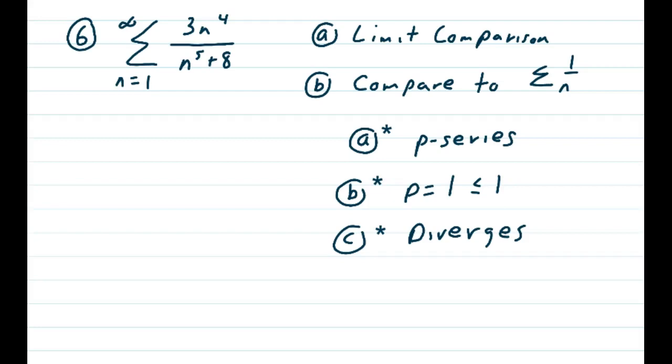And so part b is we're going to compare it to 1 over n. If we were to reduce n to the 4th over n to the 5th, you should be looking at 1 over n.